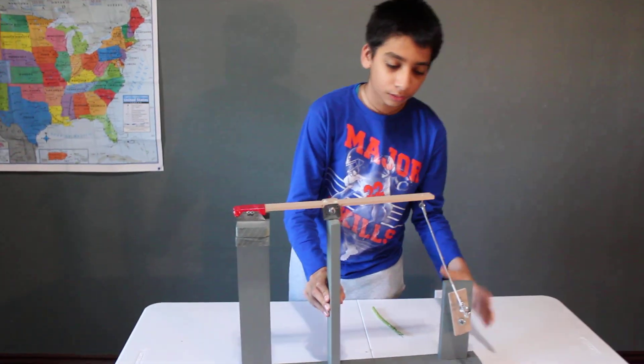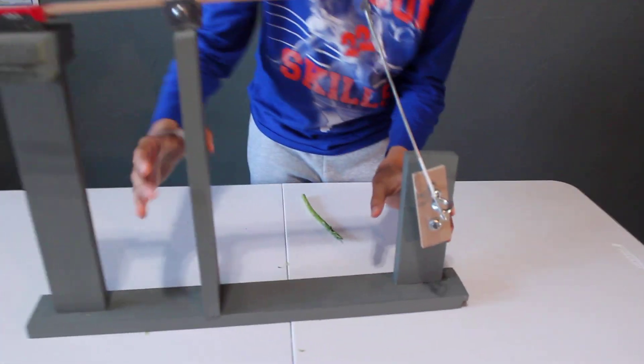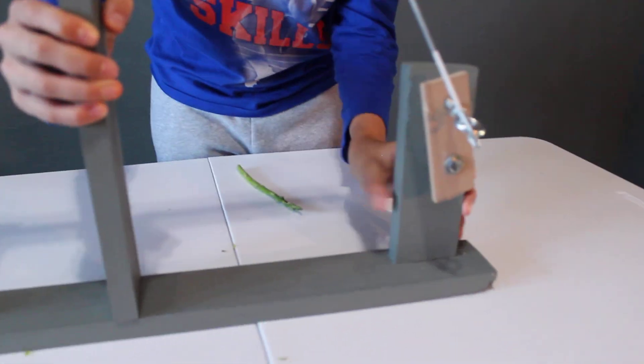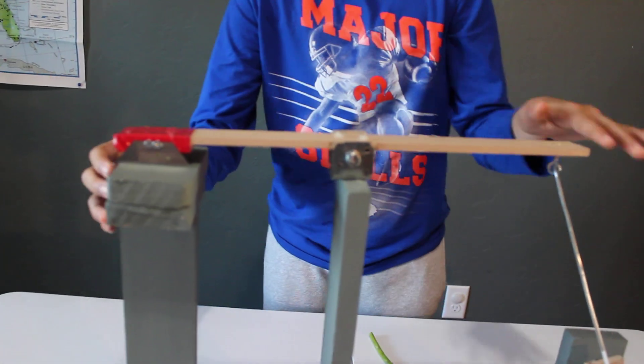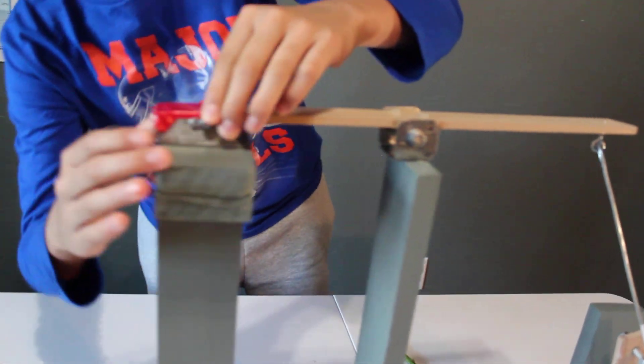It consists of four simple machines: the wheel and axle, which is right here, the movable screw, which is here, the lever, and the wedge.